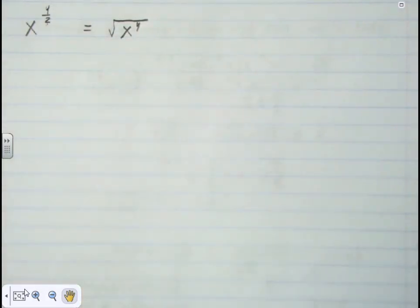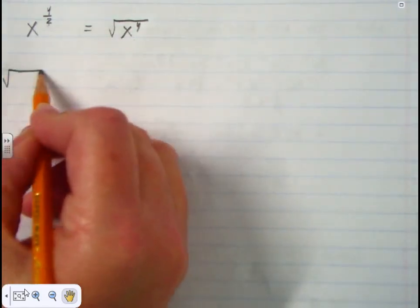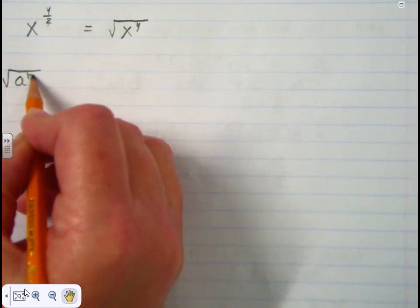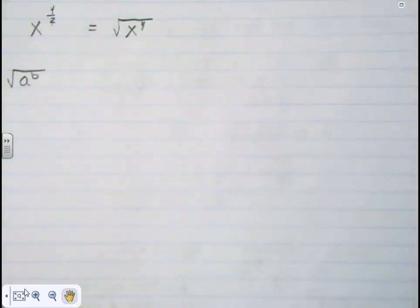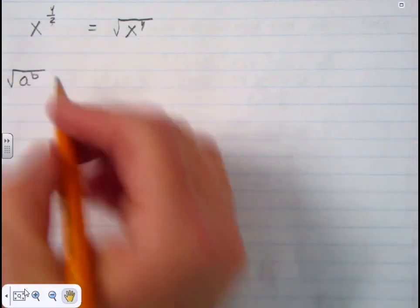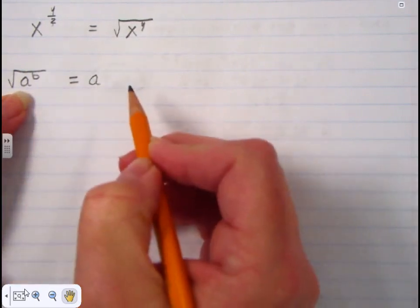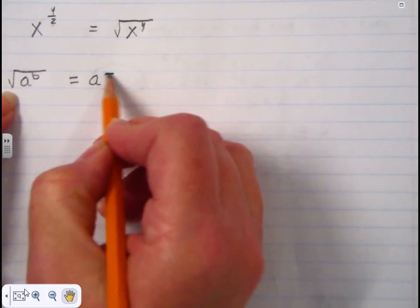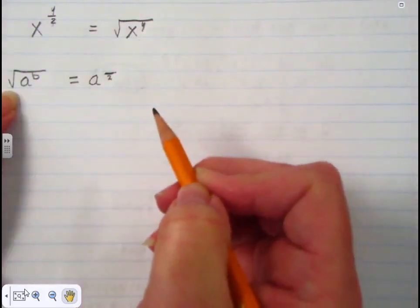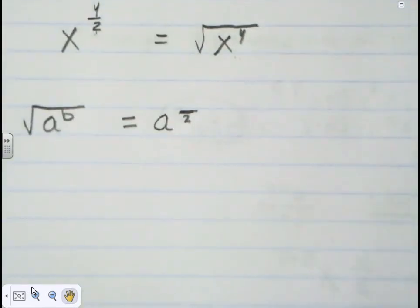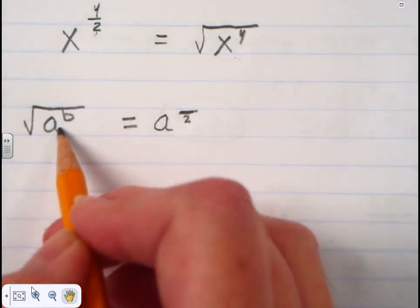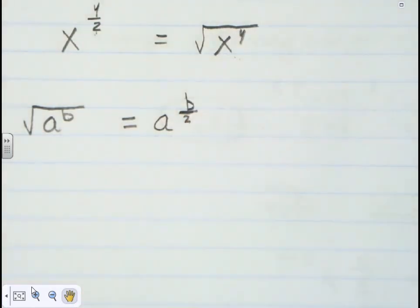In the same way, you can go from the square root of a to the b power and change that to an exponential expression. A is the base, the square root tells me I'm going to have a 2 in the denominator, and the b tells me I'm going to have b in the numerator. So b as an exponent under the radical goes to the numerator, and the square root gives a denominator of 2.